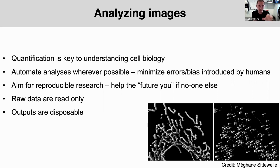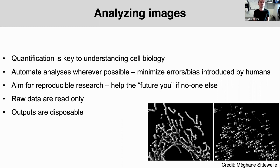We need to automate our analysis wherever we can. When humans try to do image analysis, we tend to introduce errors and bias. We need to eliminate our interference with the analysis process — automation is totally the way to go. Aiming for reproducible research means that if someone has access to your raw data and scripts, they should be able to redo your analysis and get the same results. This also helps you in the future — if you collect more data or want to rerun the analysis changing a parameter, having it scripted and automated makes that very easy.